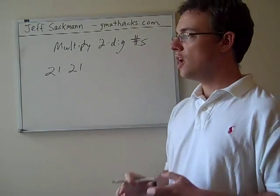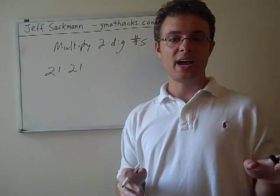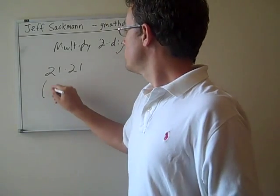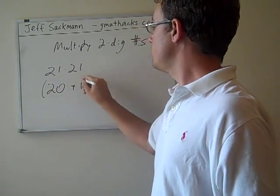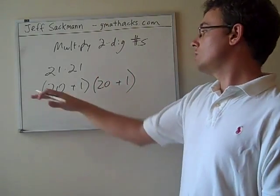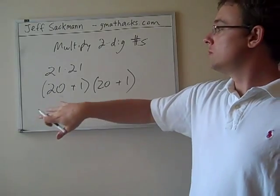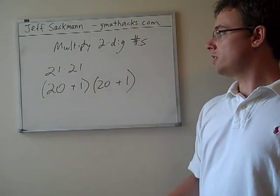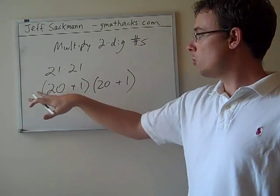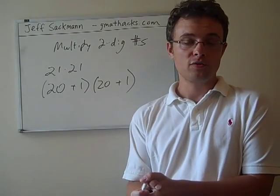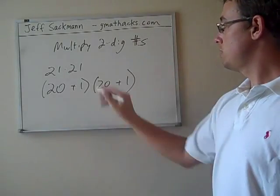With 21 times 21, we're going to apply a tactic from algebra, from quadratic equations. We're going to turn each one of these into 20 plus 1, breaking it down into the tens digit and the units digit. If this were 31, we'd do 30 plus 1. If this were 27, we'd do 20 plus 7. If you know the FOIL method from basic algebra, you can do this.